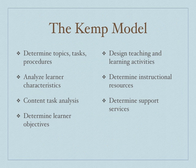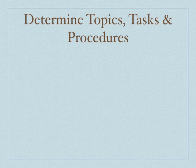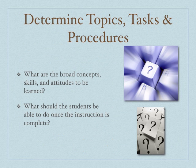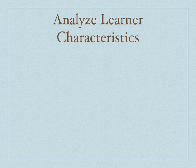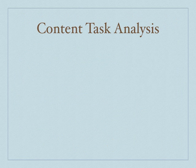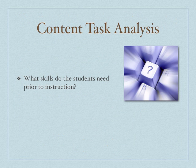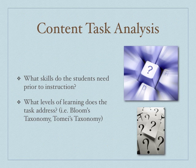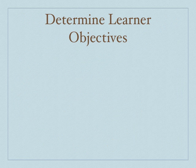Determining topics, tasks, and procedures: what are the broad concepts, skills, and attitudes to be learned? What should the students be able to do once the instruction is complete? This is very similar to ADDIE and Dick and Carey — you're identifying what the student needs to know up front. Analyzing learner characteristics: what is the student's age and grade level? Do the students have any special needs? What learning styles best describe the students? You want to look at the students and determine how they learn best. Conducting your content task analysis: what skills do the students need prior to instruction? What levels of learning does the task address? You'll be looking at things like Bloom's taxonomy and Tomei's taxonomy to identify areas in which the student needs to be proficient.